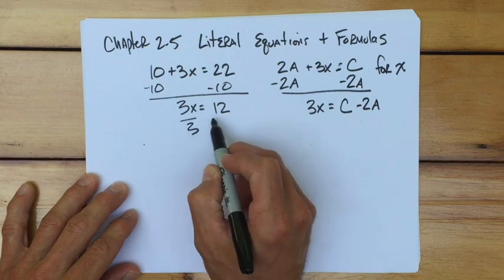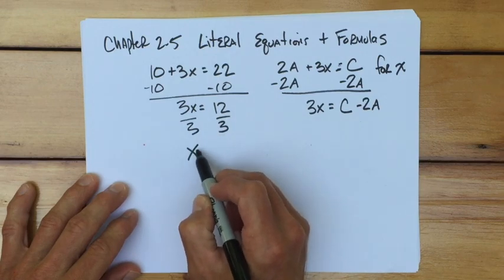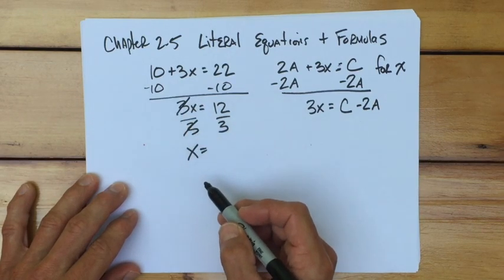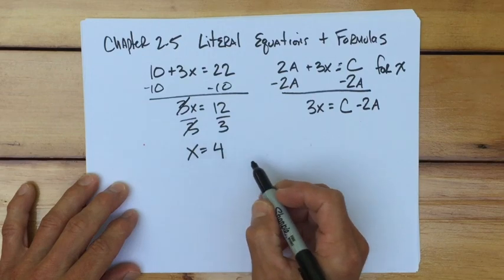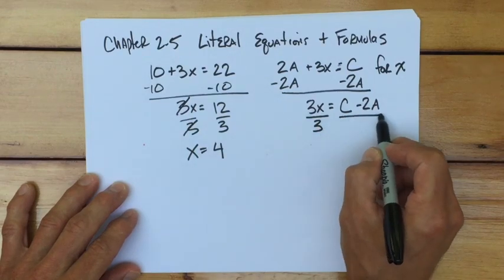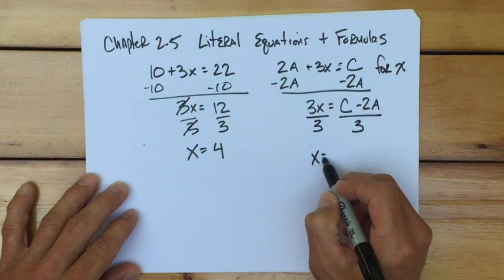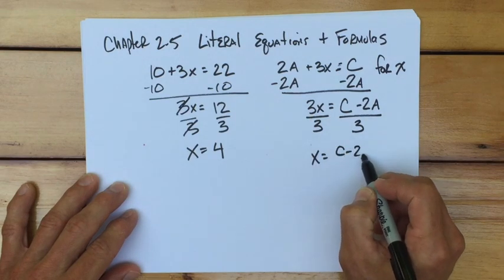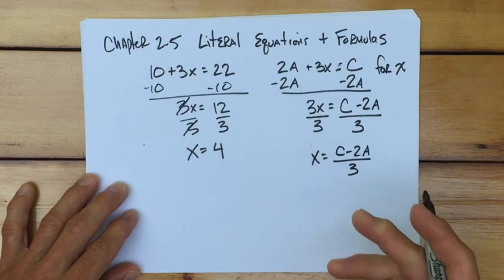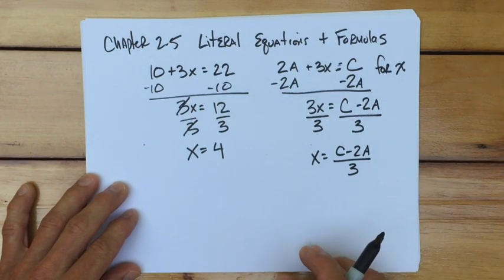Now, back to the one on the left, which we know, we would divide all sides by 3, or whatever was in front of the x, the coefficient, and we get x is 4. On this side, we still have a coefficient of 3, although sometimes you'll find a letter sitting there. If there is, you divide by it. And you get x equals c minus 2a over 3, and we're done. You've solved the literal equation.